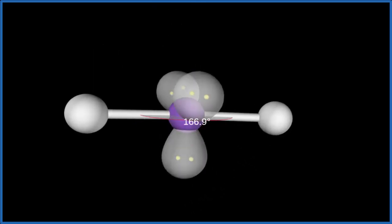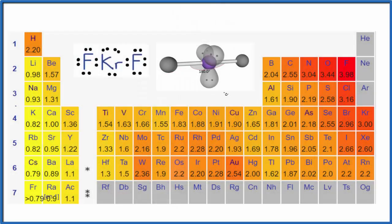Back to our Lewis structure. If we want to look at the polarity, what we need to note is that there is a difference between the krypton and these two fluorine atoms. It's a difference of 0.98.